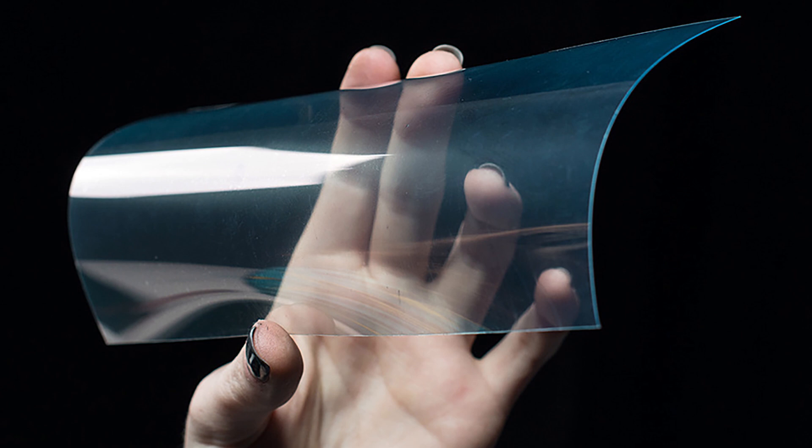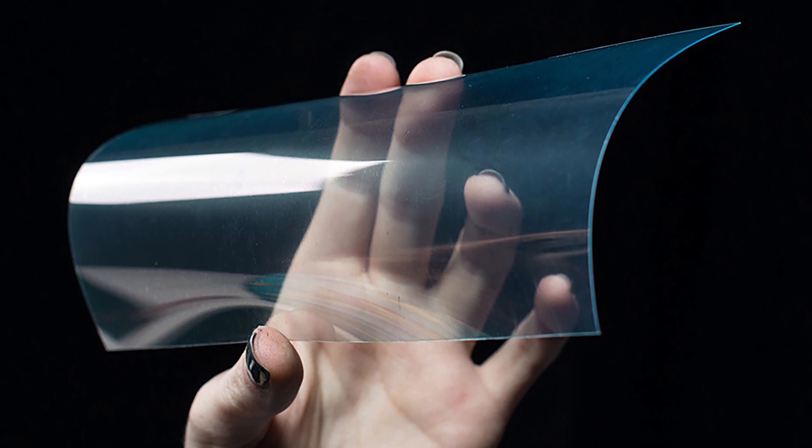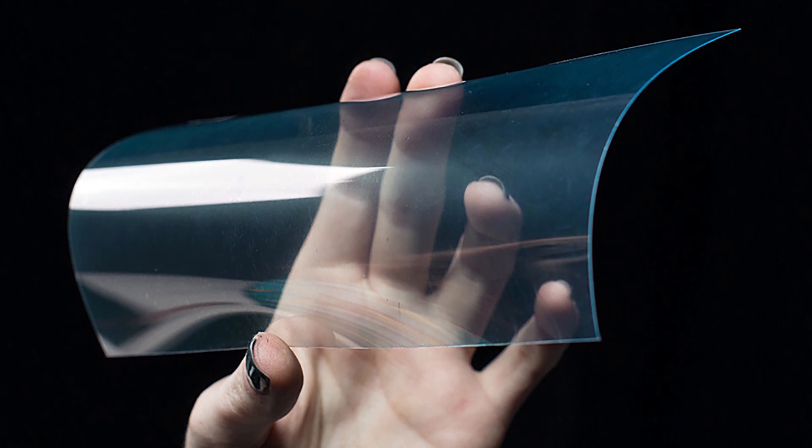One, the material has to be transparent so that light from the LEDs can pass through. And two, the material also needs to be highly conductive so that it can facilitate an electric field.